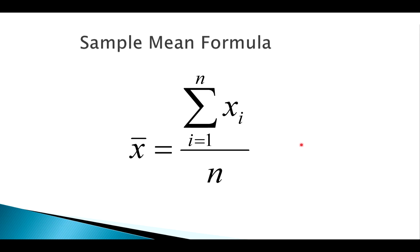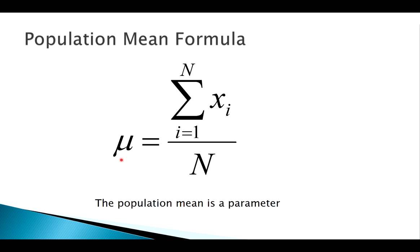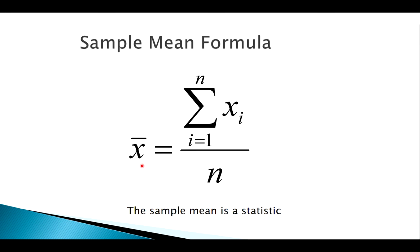Our sample mean formula looks very similar except we use lowercase n for sample size — this makes it a statistic, calculated from data. Notice the subtle differences: parameters are typically denoted with Greek letters like mu, while statistics use regular Roman letters. So mu (μ) is our population mean and x̄ (x-bar) is our sample mean.